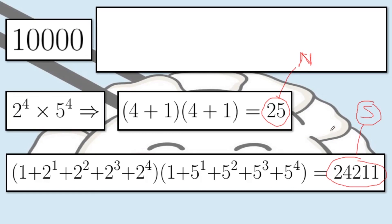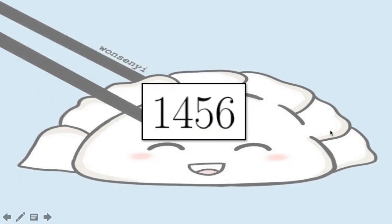Hopefully you guys learned something from this video and will be able to utilize the trick to get the number of divisors or even the sum of the divisors quickly. As a final item, you guys can solve and post your answer in the comment section below: try to get the number of positive integer divisors as well as the sum of the positive integer divisors of the number 1,456. I'll see you again in the next video. Bye-bye!